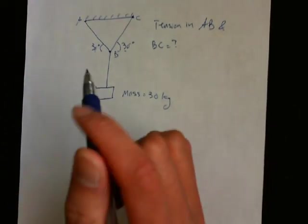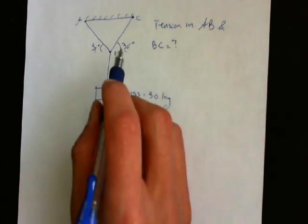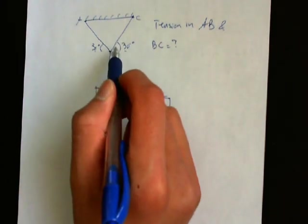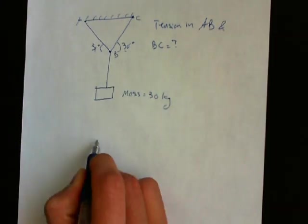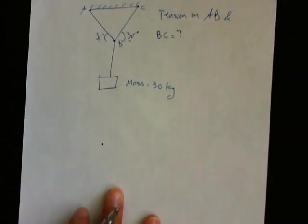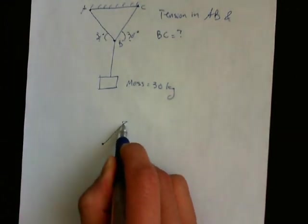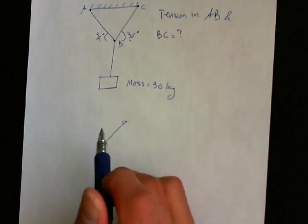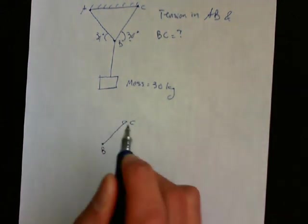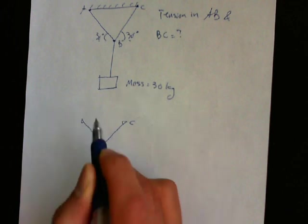To start this problem we draw our free body diagram. All the forces are acting on point B. So here is point B. Here's the tension in rope BC, and here's the tension in rope AB.